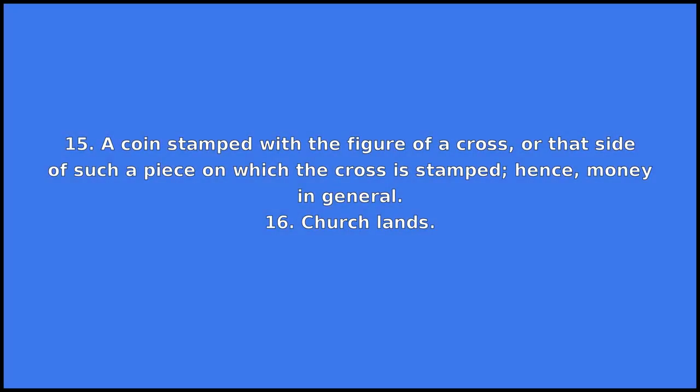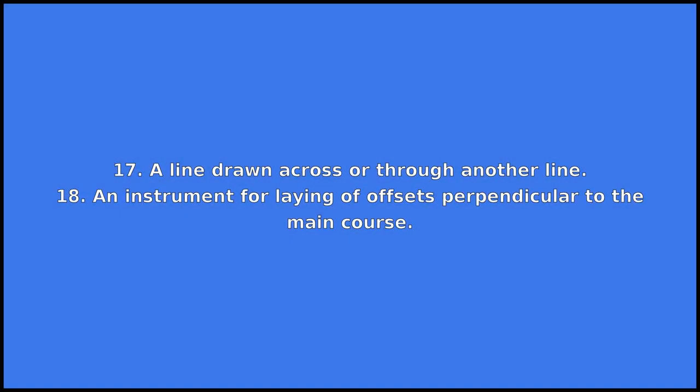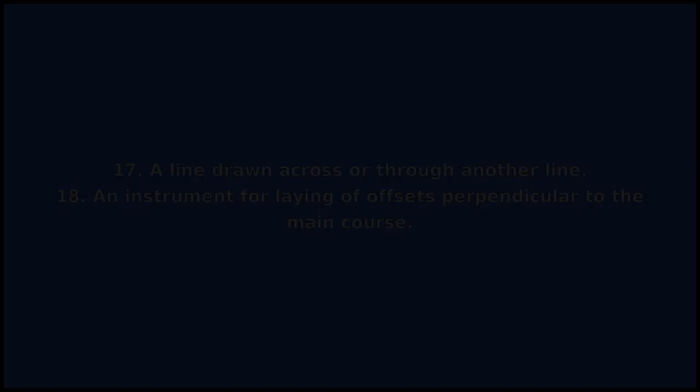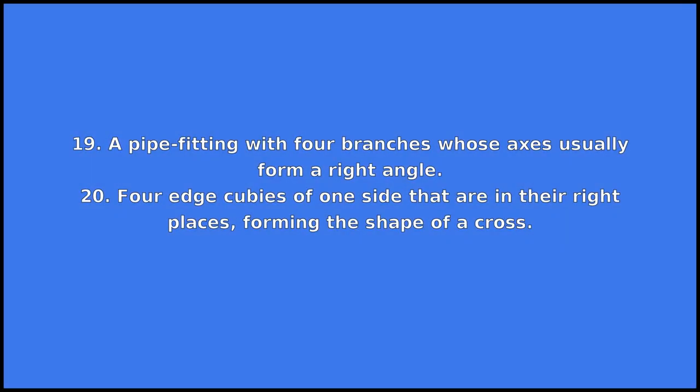Also common in UK or Irish place names such as Charing Cross. 15. A coin stamped with the figure of a cross, or that side of such a piece on which the cross is stamped; hence, money in general. 16. Church lands. 17. A line drawn across or through another line. 18. An instrument for laying offsets perpendicular to the main course. 19. A pipe fitting with four branches whose axes usually form a right angle. 20. Four edge cubies of one side that are in their right places, forming the shape of a cross.